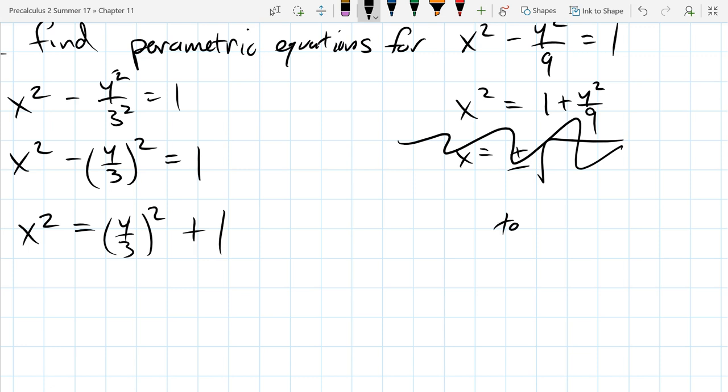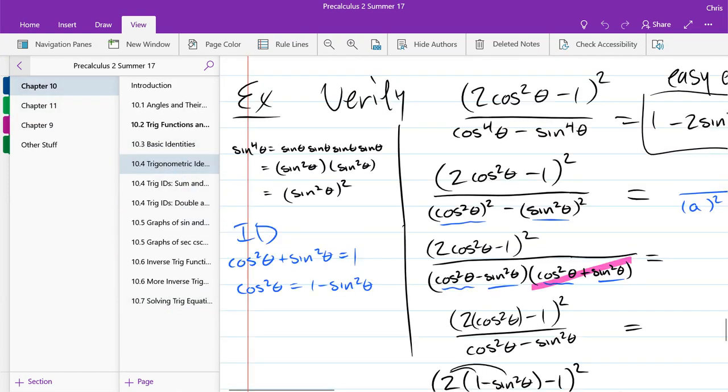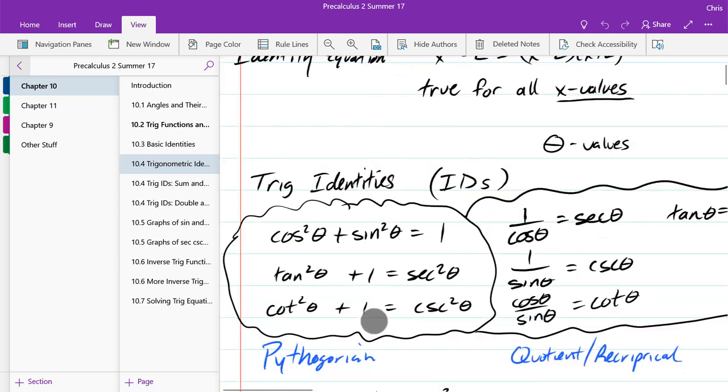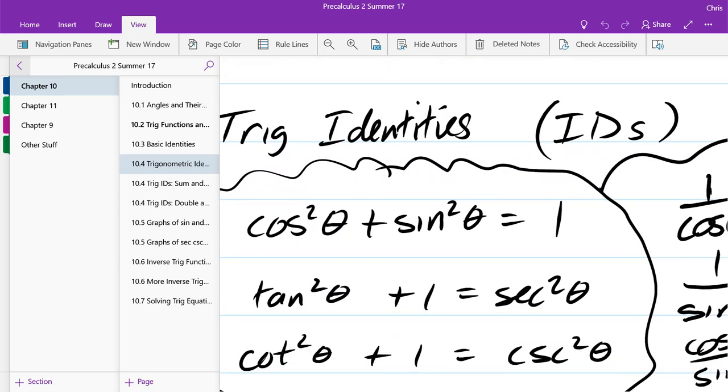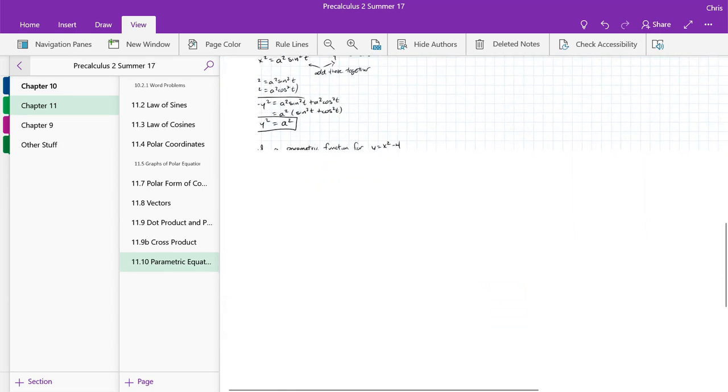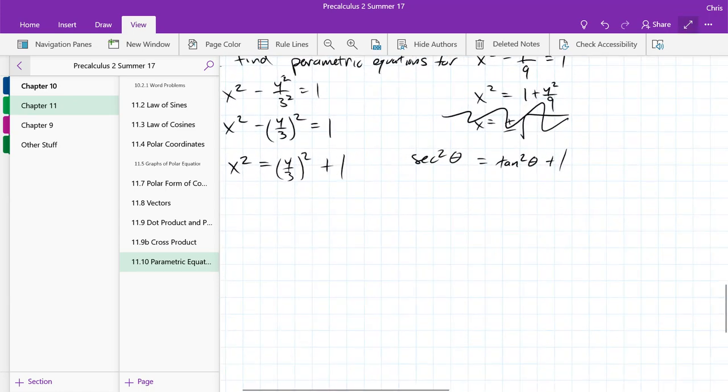Now, normally I read it as tangent squared theta. Tangent squared plus 1 equals secant squared. Let's run back and check. Yup, tangent squared plus 1 equals secant squared. Alright. So we got the right identity.